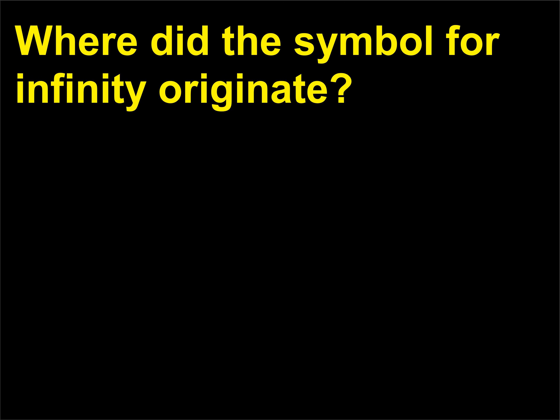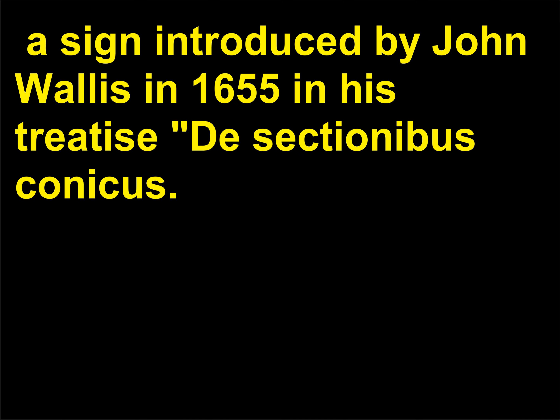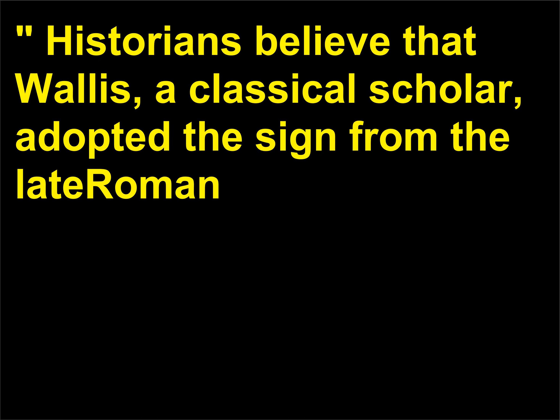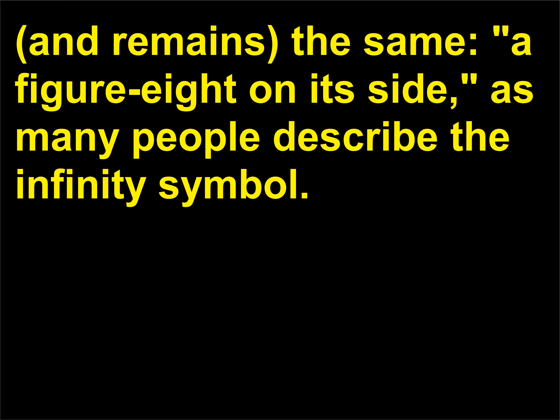Where did the symbol for infinity originate? Infinity is represented by the symbol ∞, a sign introduced by John Wallis in 1655 in his treatise De sectionibus conicis. Historians believe that Wallis, a classical scholar, adopted the sign from the late Roman symbol for 1,000. Whether it was from there or another source, the result is the same: a figure-8 on its side, as many people describe the infinity symbol.